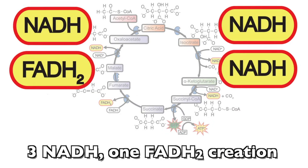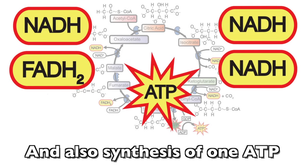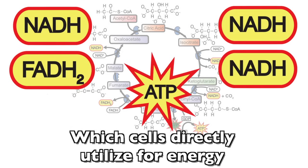The cycle's function is energy transformation: 3 NADH, 1 FADH2 creation. And also synthesis of 1 ATP, which cells directly utilize for energy.